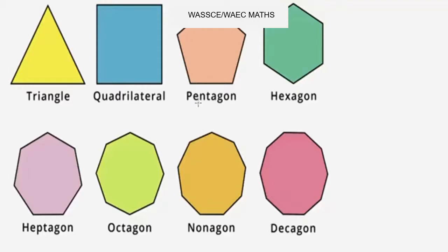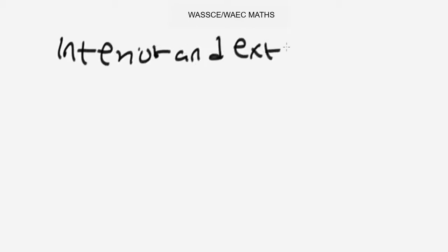Now let's look at the concept of exterior and interior angles, because that is basically where you see problems in math involving polygons. It is important you know how to deal with problems involving interior and exterior angles of a polygon. Let's remove this diagram and look at how to deal with problems on these concepts.